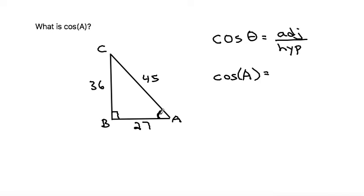We need to find the adjacent side from the perspective of angle A. The adjacent side is the side that's touching angle A, but is not the hypotenuse. The hypotenuse is opposite from the 90 degree angle. So the adjacent side would be 27.